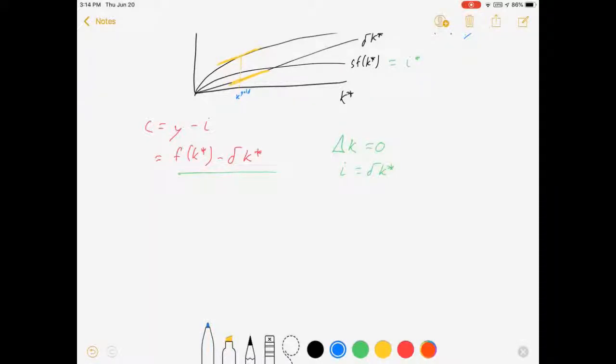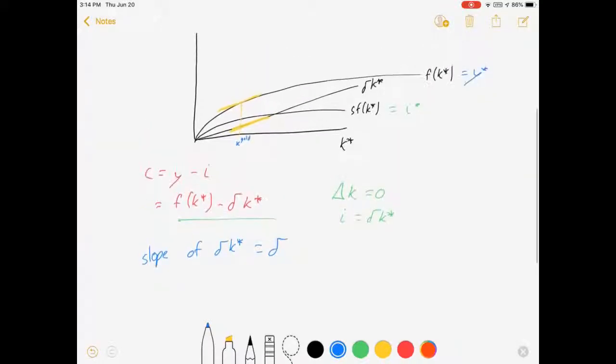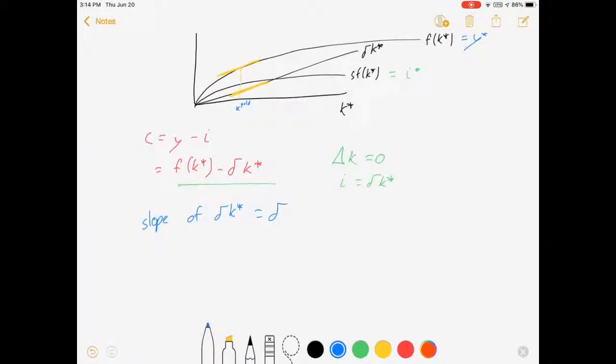Now the slope of the depreciation curve is delta. It's a straight line, delta is the slope. So slope of delta K star is delta. So I want to find the point where the slope of F of K star equals delta.